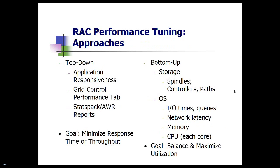That's the same approach you take even on a RAC system. You need to know about the new things — the interconnect is huge, you need to understand what the wait events are related to it — but your basic approach to tuning is essentially the same. You're going to look at IO, network, memory, and CPU. From the top down, you're going to look at wait events, time spent, and throughput.